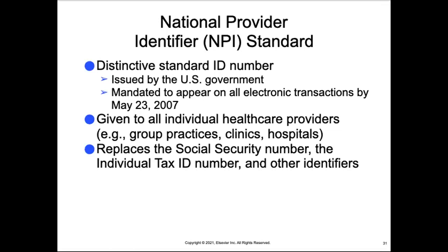The National Provider Identifier Standard, or NPI, is a distinctive standard ID number issued by the U.S. government. It was mandated to appear on all electronic transactions by May 23, 2007, and was given to all individual healthcare providers, like group practices, clinics, and hospitals. It replaces the social security number, individual tax ID numbers, and other identifiers. The reason it was created was to reduce the possibility of identity theft, so that patients' social security numbers weren't going into different databases that have the possibility of being hacked.